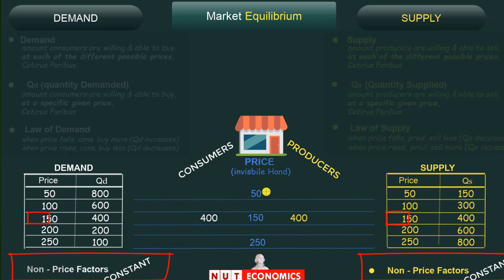Starting with the lowest price of 50: if anything is too cheap, there will be many consumers who want to buy but not many producers willing to sell, since low price means low profit. The demand table tells us that at a price of 50, quantity demanded is 800, while the supply table tells us quantity supplied is only 150 — giving an excess demand or shortage of 650 units.